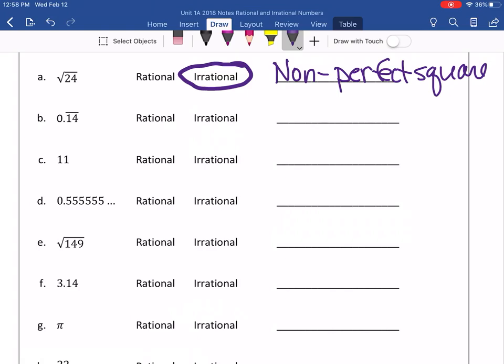Letter B. What kind of decimal is that? It is a repeating decimal, and we know that all repeating decimals are rational. So, your explanation for why is it rational? Because it is a repeating decimal.